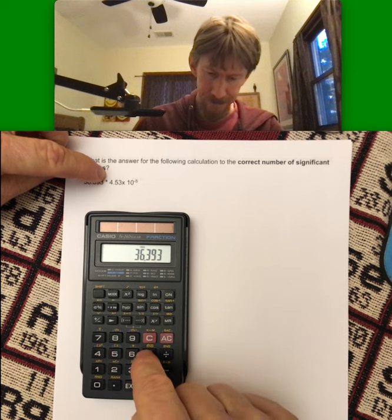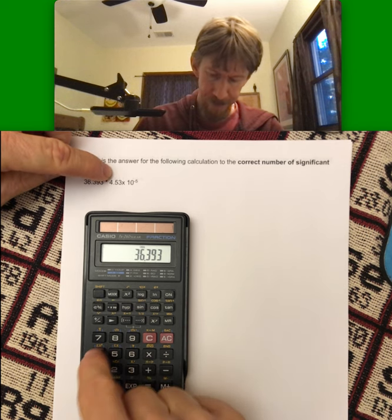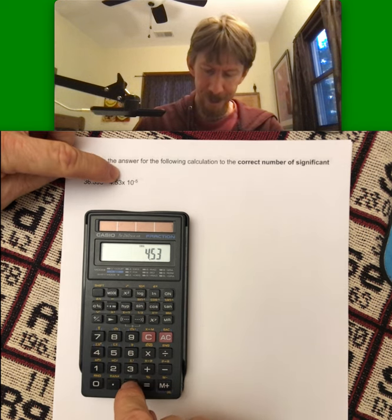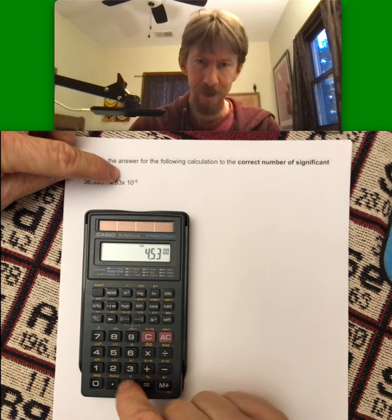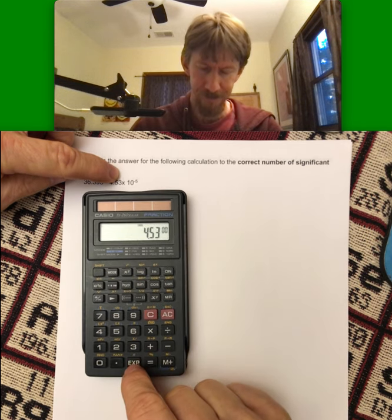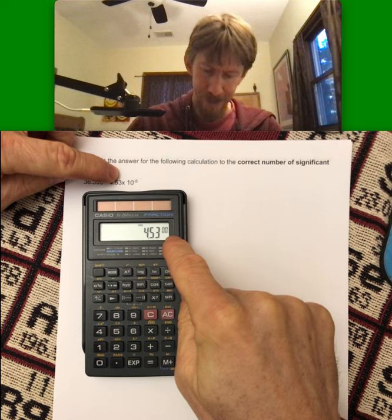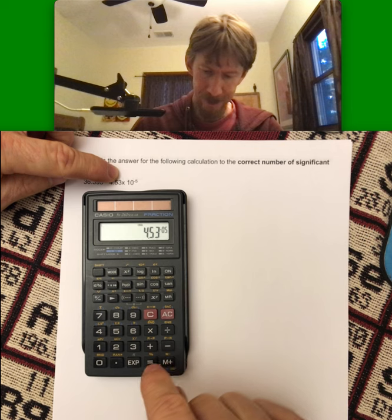That's times 4.53. And then for me, times 10 to the minus 5th means that I have to hit this exponent button. I hit it. Then I get my 5 minus. And then I hit my equal sign.